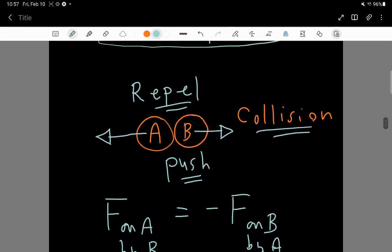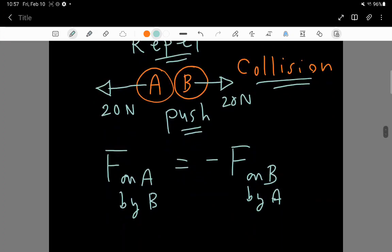If B was repelled from A or pushed away by A by 20 newtons, then A is going to be pushed away from B also by 20 newtons. And this minus sign is the fact that the arrows are pointing in opposite directions. So the minus sign is the opposite. The equals refers to the fact that they're going to have the same strength. And this is Newton's third law.